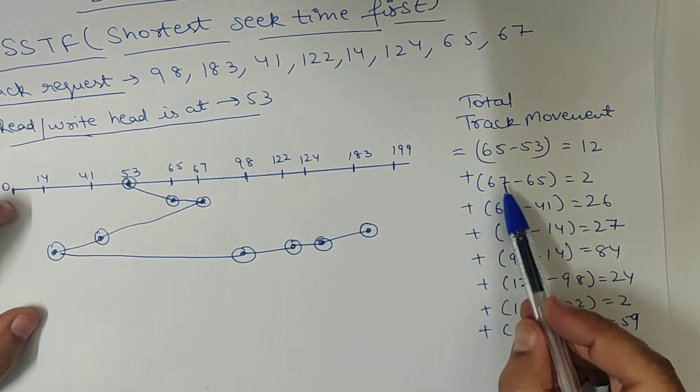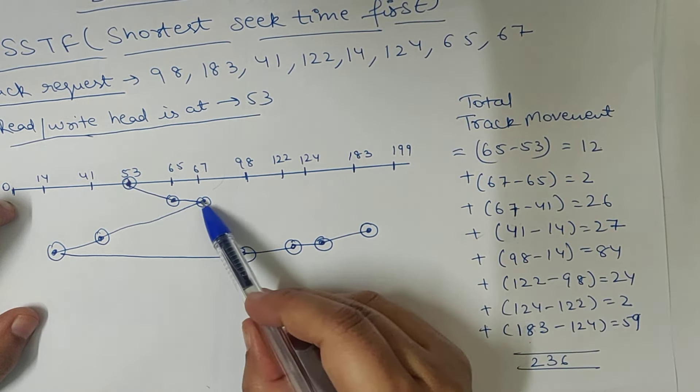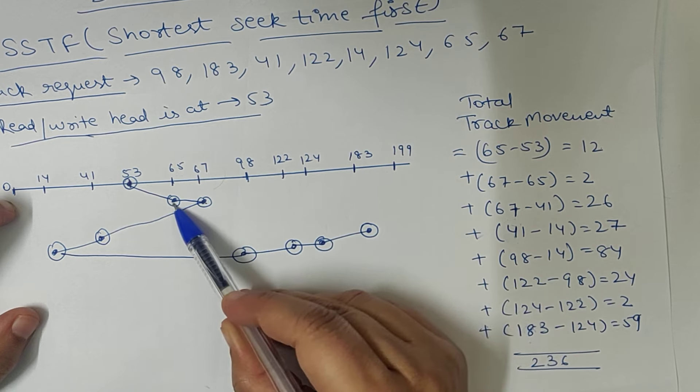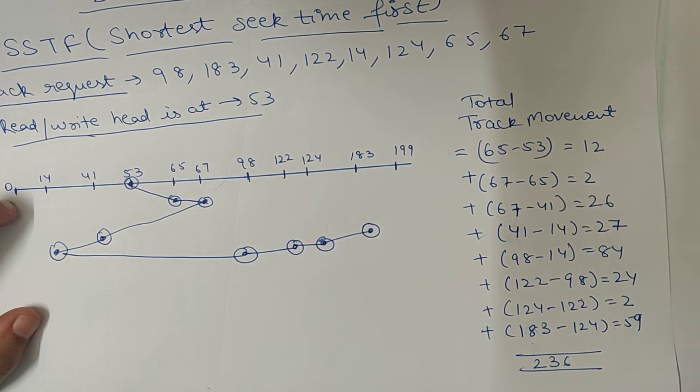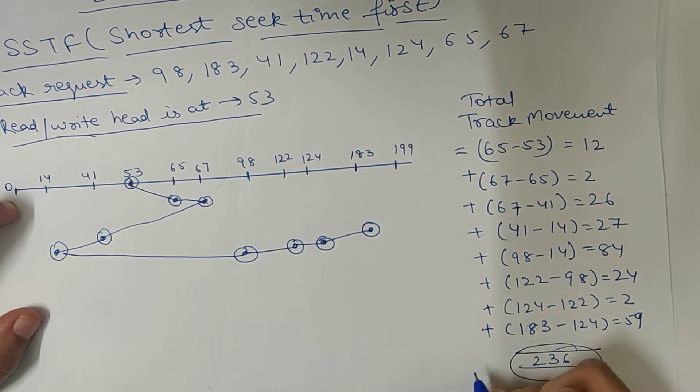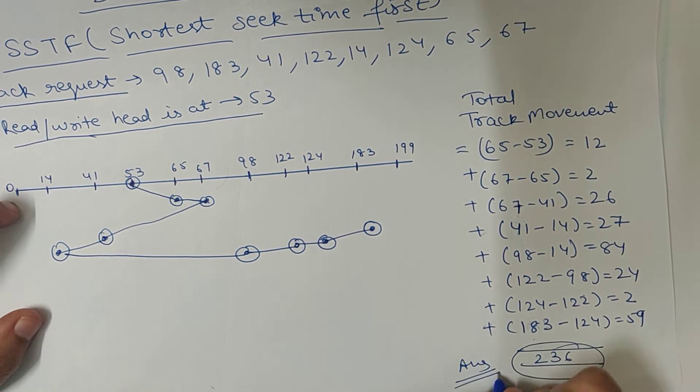Then, it went from 65. So, 67 minus 65, which is 2. So, this way, we have to calculate the track movement like this. And finally, the track movement, it came to 236, which is the answer.